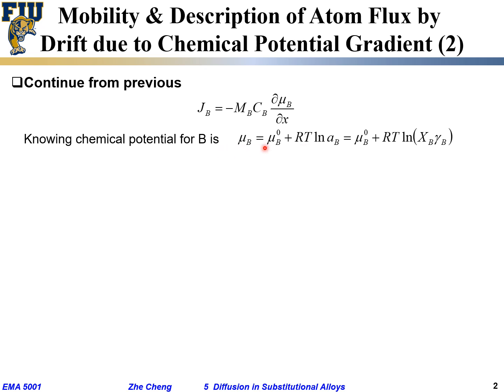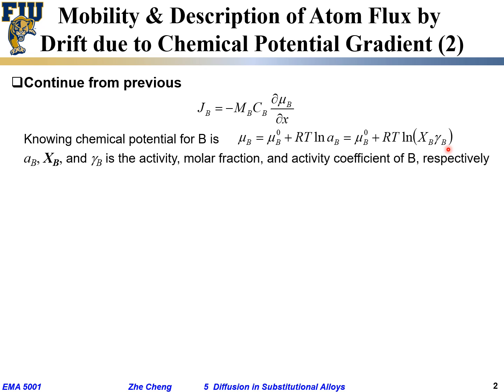The activity is often rewritten as activity coefficient gamma times molar fraction. For a dilute or ideal solution, activity equals the molar fraction. If it's not ideal, there's the so-called gamma, the activity coefficient — that's what you learn in thermodynamics. So chemical potential equals the standard state value plus RT·ln(x_b) plus RT·ln(γ_b).